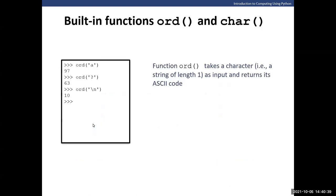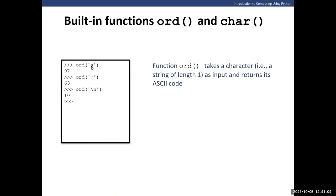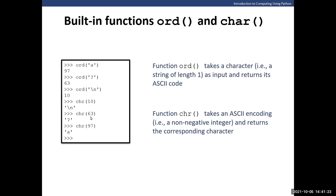We're going to use the function `ord` and the function `chr`. The function `ord` gives us the hexadecimal value of a letter — for example, letter 'a'. If we compare a capital letter 'A' to a small letter 'a', the small letter has more value. The string 'a' lowercase is always greater than the string 'A' capital. The function `ord` takes a character — a string with a length of one — and returns the ASCII code.